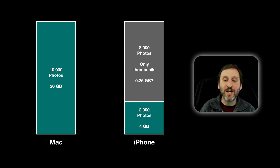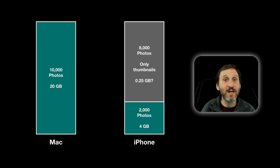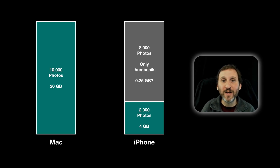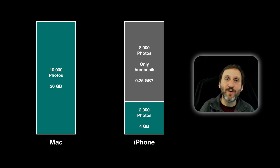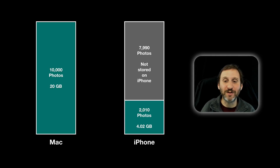How does it decide which 2,000 photos are full resolution and which 8,000 aren't? These are just sample numbers. The 2,000 represents your most recent photos — the ones you've just taken and the ones you've just viewed. It uses some intelligence to figure out which ones to keep. For example, if you view an album and look at ten photos, you might get ten more stored at full resolution while the rest remain as thumbnails.